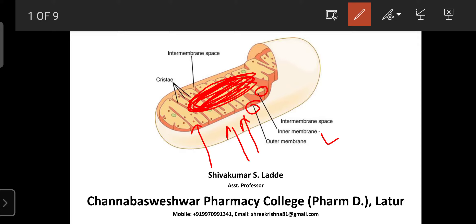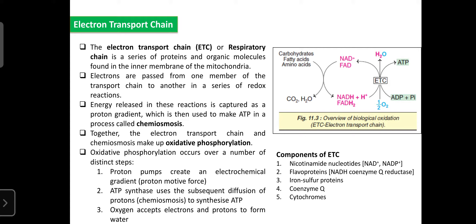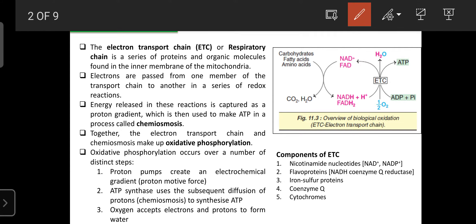The mitochondria consists of an outer and inner membrane. The inner membrane plays an important role in the electron transport chain, which is also known as the respiratory chain, and is helpful for the generation of ATP. The matrix is helpful for the metabolism and oxidation of biological molecules. The electron transport chain — also known as ETC or respiratory chain — consists of a series of proteins or organic molecules.